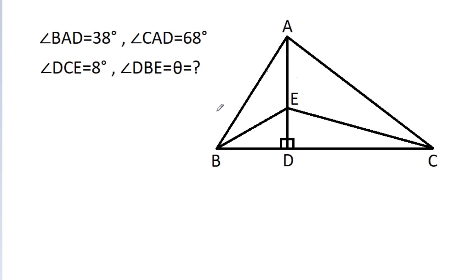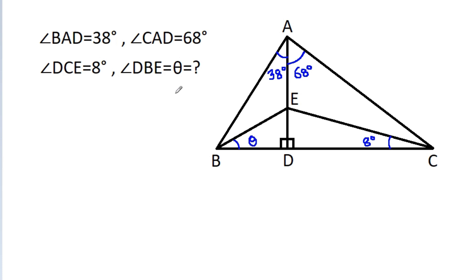In this video, we have given that angle BAD is 38 degrees, angle CAD is 68 degrees, angle DCE is 8 degrees, and angle DBE is theta. Then we have to find the value of theta.